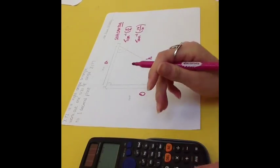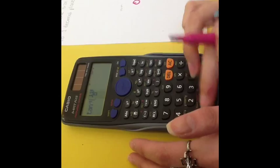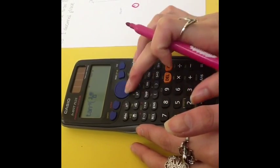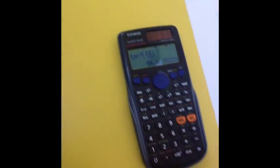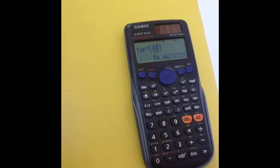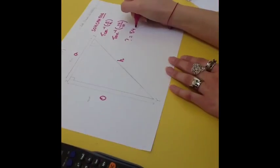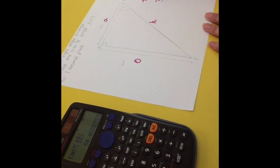I'll do this on your calculator. Tan inverse 14 over 10. And that gives you— So, the angle equals 54. Yep. 54 degrees.